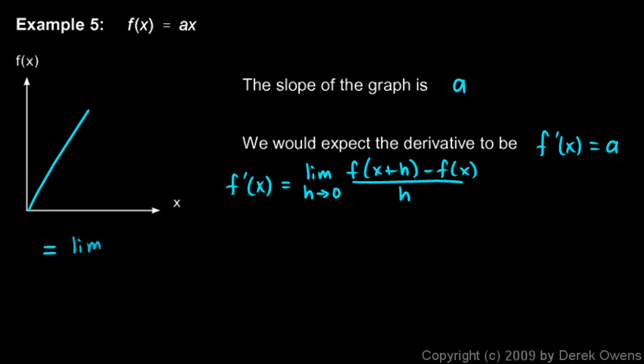So let's write the limit as h approaches 0. f of x plus h is going to be a times x plus h. Then we have minus f of x, and f of x is simply ax, so it's minus ax all over h.